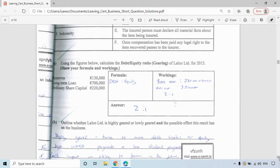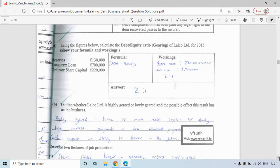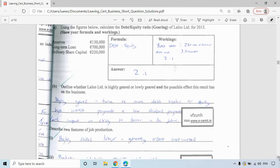Outline whether Lalco Ltd is highly or lowly geared and a possible effect this result has on the business. They're very much highly geared because it's twice as much debt capital as equity. A business does not want to be relying as much on their long-term loans as reserves and ordinary share capital because that money has to be paid back if the business is failing. So there could be high interest payments to the bank, low dividend payments to your investors, and it may impact your ability to borrow in the future. That's worrying for that business.